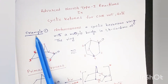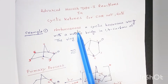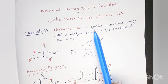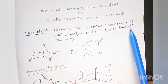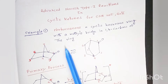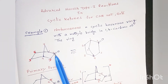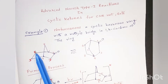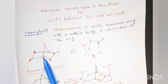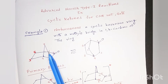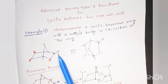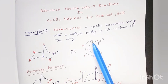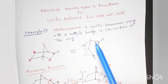Let's see first the example of Norbornenone. Norbornenone is nothing but a cyclic hexanone ring with a methyl bridge on the first and fourth carbon atoms of the ring. This is the structure with carbons 1, 2, 3, 4, 5, 6, and 7. This is the methyl bridge between the first and fourth carbon of the cyclohexanone ring. This is the carbonyl group on the second carbon atom. This can be written like this also.